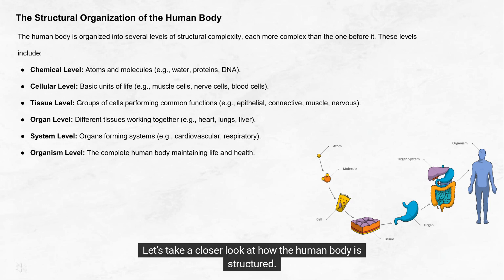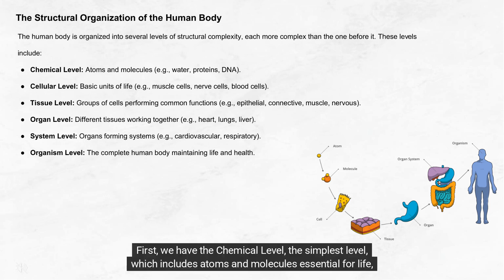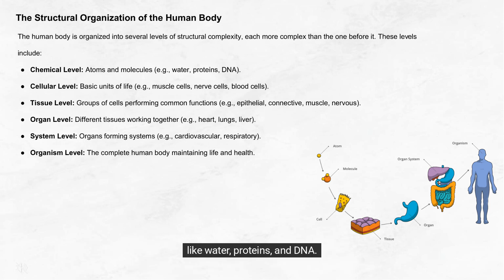Let's take a closer look at how the human body is structured. The body is organized into several levels, each one building on the previous to form a more complex system. First, we have the chemical level, the simplest level, which includes atoms and molecules essential for life, like water, proteins, and DNA. These are the building blocks of everything in the body.